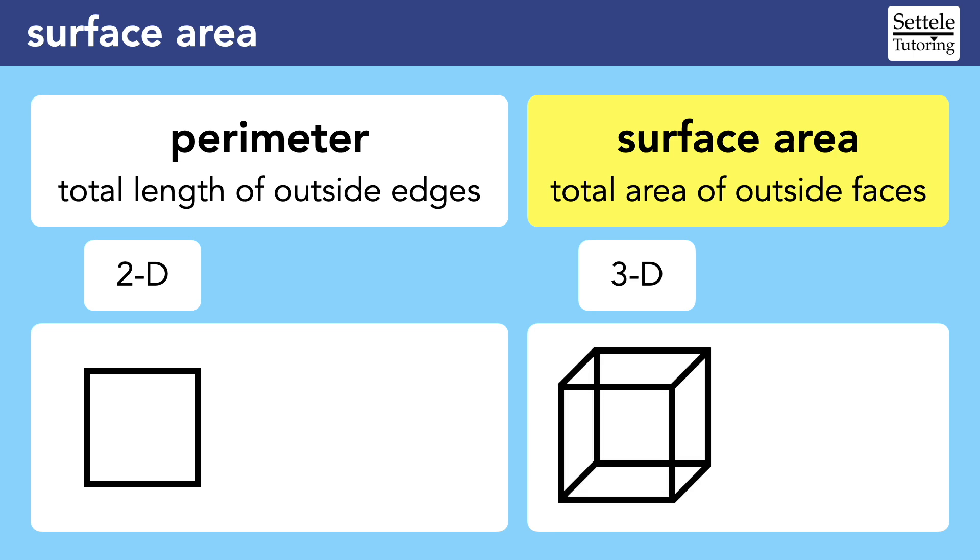Even more specifically, perimeter is a way of turning a two-dimensional shape into a one-dimensional measurement, and surface area is a way of turning a three-dimensional shape into a two-dimensional measurement.